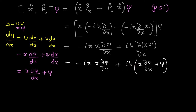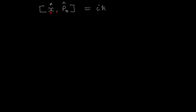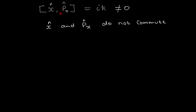Now I take i·h-bar out as a factor. After doing so, I have: minus x·∂ψ/∂x plus x·∂ψ/∂x plus psi. The first two terms cancel out, leaving just psi. Therefore the position and momentum commutator equals i·h-bar·psi, which simplifies to i·h-bar. Since it's not equal to zero, the position operator and momentum operator do not commute — meaning the order of multiplication is very important and x times p is not equal to p times x.